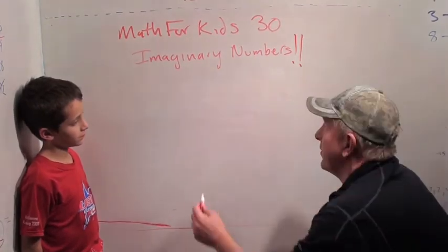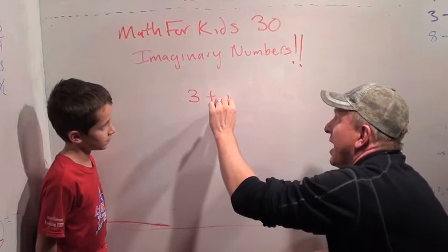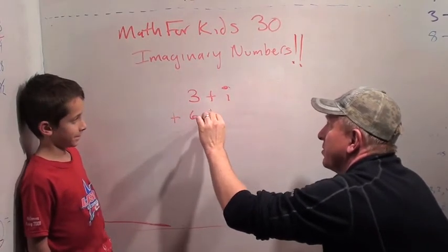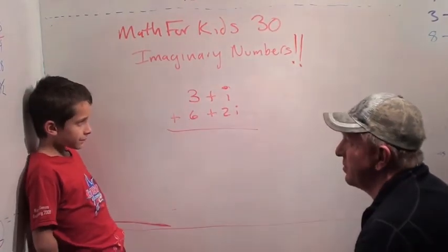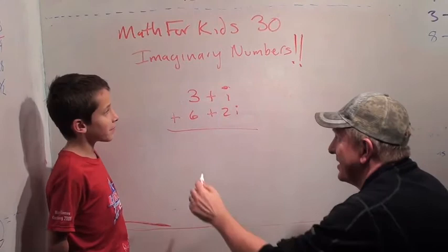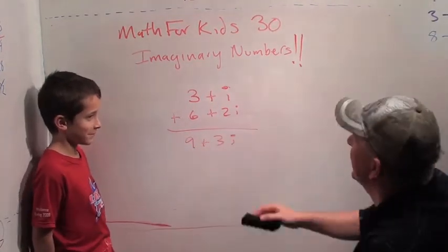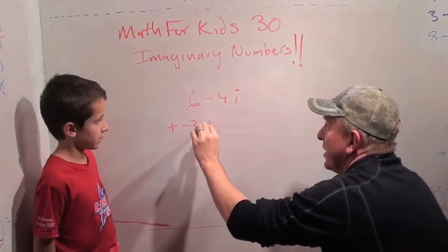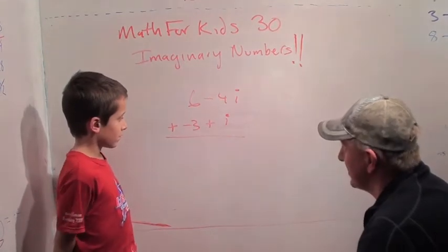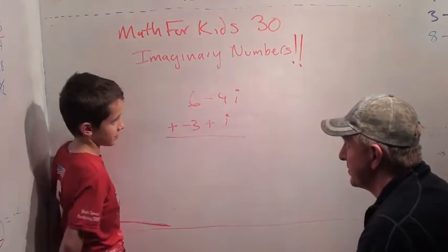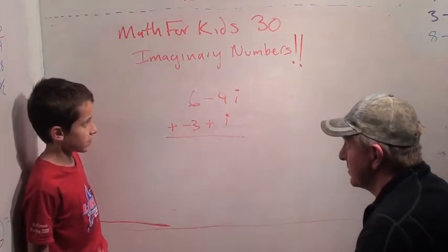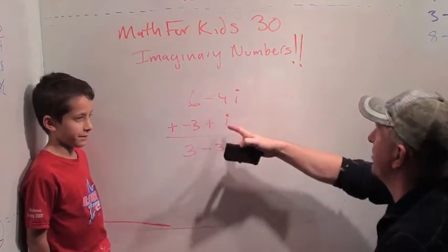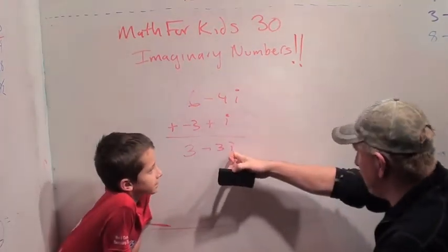Let's have some fun. What if I had three plus I? We have no idea what that is. What is three plus I? We know what three is, we know what I is. And then I wanted to add six plus two I. You think this would work? What do you think this would be if the world was going to work normally? Nine plus three I. What about something a little more tricky? Six minus four I plus minus three plus I. What do you think this would be? Three minus three I. Because minus four I plus I is minus three I, and six plus minus three is three. And the other thing we know about I is I squared is minus one, so when we don't have an I squared, we just leave it as I.